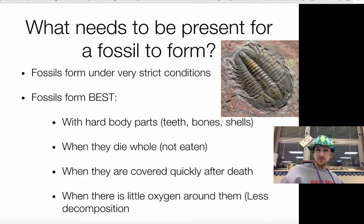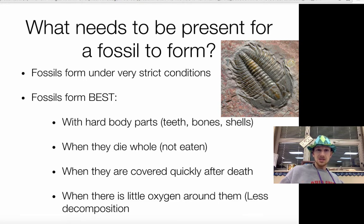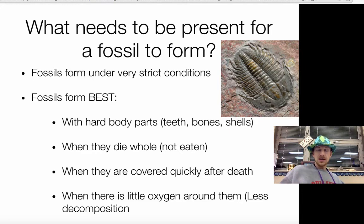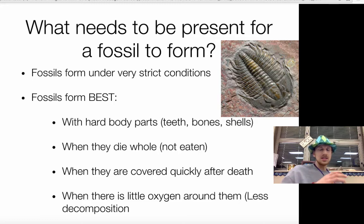Fossils are not really that easy to form. If you've ever driven down the road and you see a dead something on the side of the road — if you drive by it every day for a couple weeks, you'll notice it starts to decompose. If that happens, it will not become a fossil. Fossils form under very strict conditions. They form best when the organism has some kind of hard body parts — whether it's wood (a hard part of a plant), teeth, bones, or shells. Little flowers are not easy to fossilize. They also get preserved best when they die whole, so if something comes along and eats part of it and rips it up, that exposes it to decay and it probably won't fossilize. Doesn't always have to die whole, but it's preserved best when everything is intact.